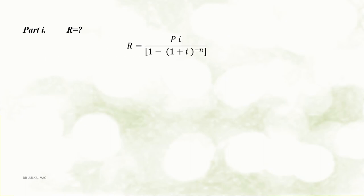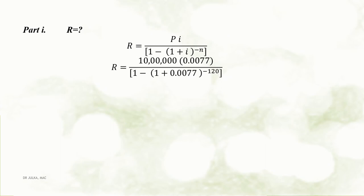Part 1: Here we want to calculate capital R, amount of installment. The periodical installment denoted by capital R is calculated using the formula P multiplied by i, the whole divided by 1 minus (1 plus i) raised to the power minus n. Putting P = 10 lakh, i = 0.0077, and n = 120, after calculation we get the monthly installment amount.